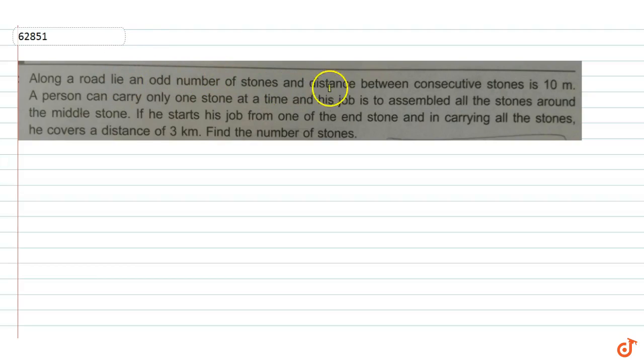Along a road lie an odd number of stones and the distance between consecutive stones is 10 meters. A person can carry only one stone at a time and his job is to assemble all the stones around the middle stone. If he starts his job from one of the end stones and in carrying all the stones he covers a distance of 3 km, find the number of stones.